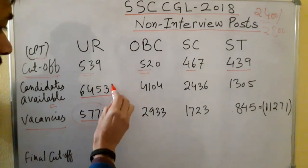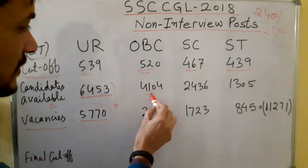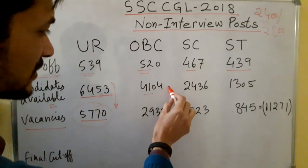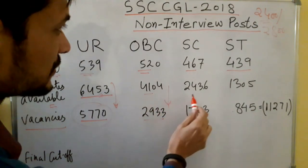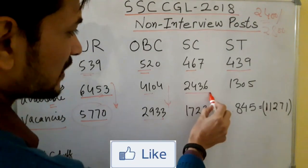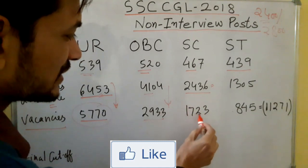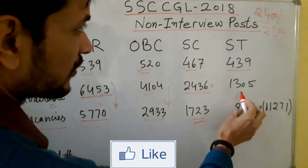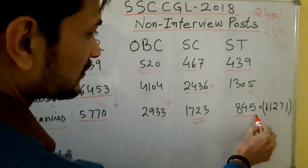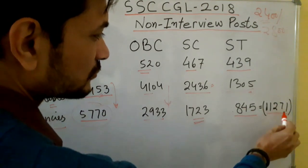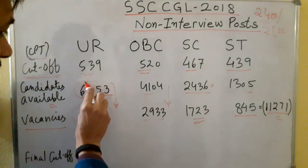In UR there are 4104 candidates available against 2993 vacancies, and 3803 in another bracket. In the ST category, 2436 candidates are available against 1723 vacancies. In ST, there are 1305 candidates against 845 vacancies. Available candidates in 2018 total 11271. Many of these children won't even go to document verification — quite a few skip it as well.